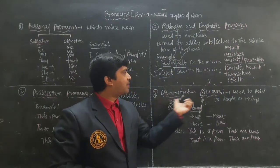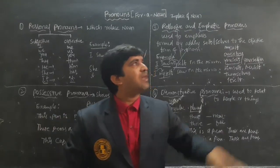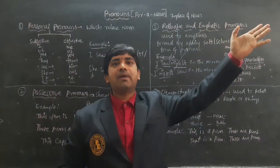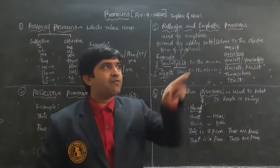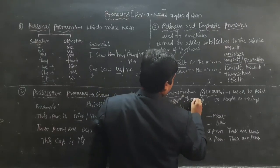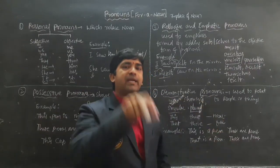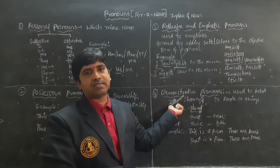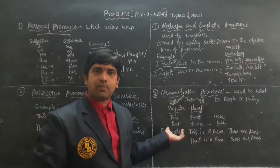The next one is Demonstrative Pronouns. This is a piece of chalk. That is the sky. This is a building. That is a building. Those are pens. These are pens. For showing or pointing out people or things, we use Demonstrative Pronouns.